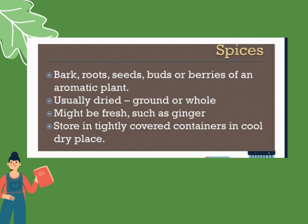Next, spices. These are bark — pag sinabi po nating bark, ito yung first layer ng stem o balat ng puno, yung kulay brown — roots, seeds, buds, or berries of an aromatic plant. It's usually dry, ground, or whole. It might be fresh, such as ginger or luya.